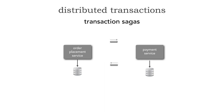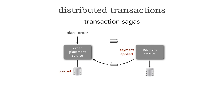Let's see the happy path. I place an order — it gets inserted with a state of 'created.' I send a fire-and-forget message, totally asynchronous, over to the payment service. I'm done. The payment service then says the payment was applied — either using a gift card, store credit, or a credit card — and it sends a message back to me. I can now say that it's 'approved' and ready to be fulfilled.